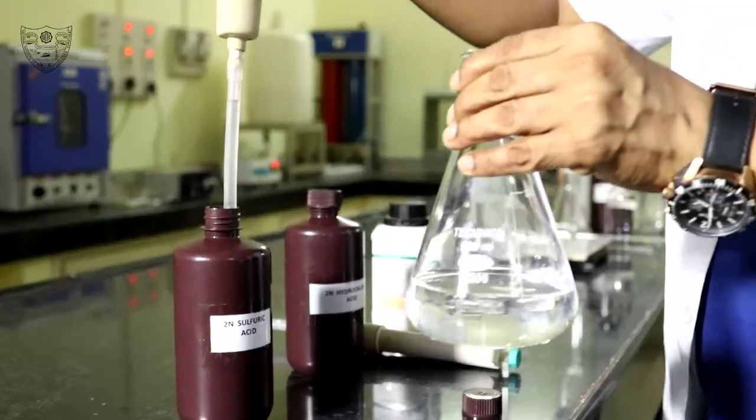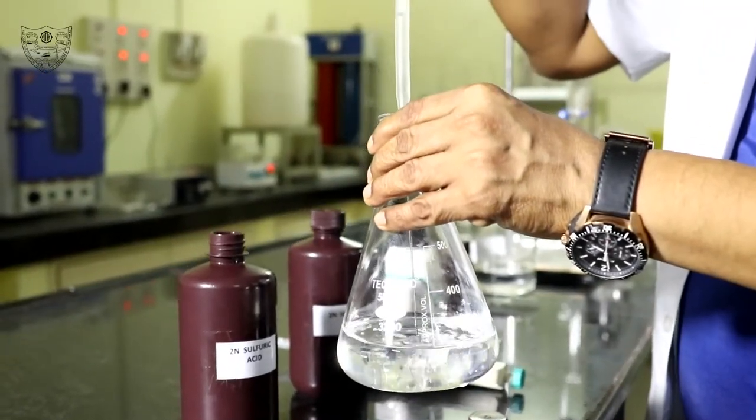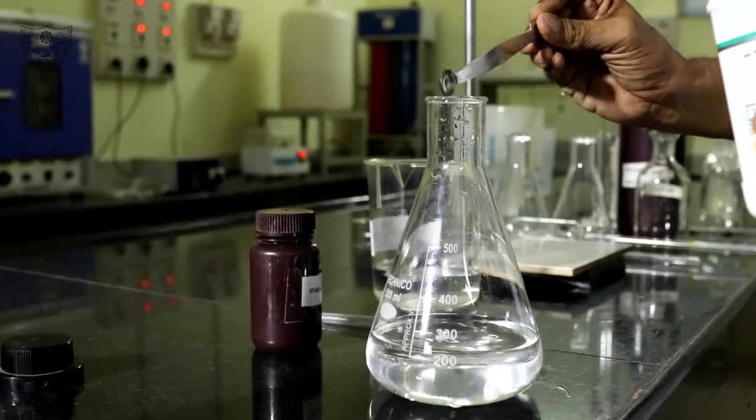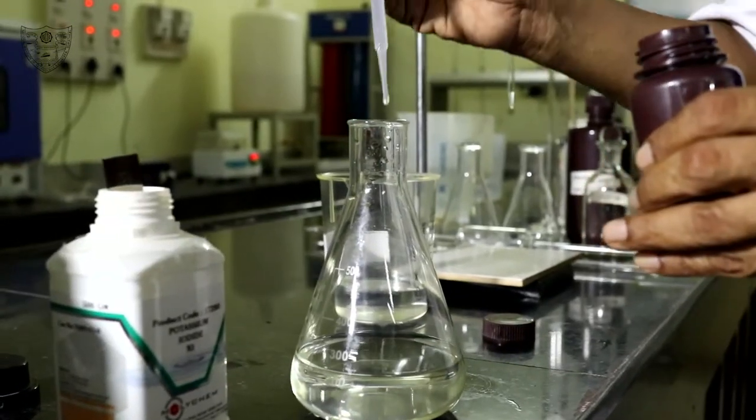Add 5 ml of 2 normal sulphuric acid, a spatula of potassium iodide, followed by starch solution.